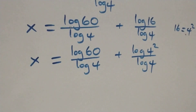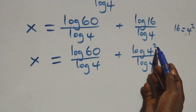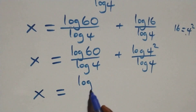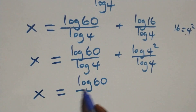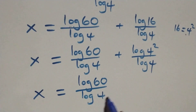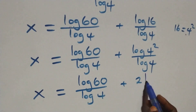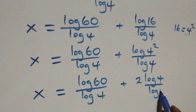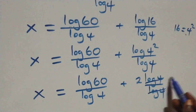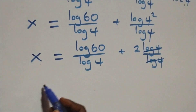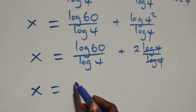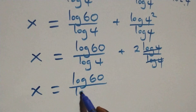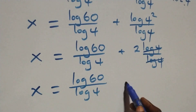Then here, applying the power law of logarithm, the two comes out front and we have x equals log sixteen over log four plus two log four over log four. This implies that log four cancels log four, leaving two. So we have x equals log sixty over log four plus two.